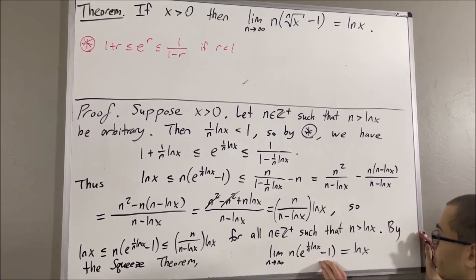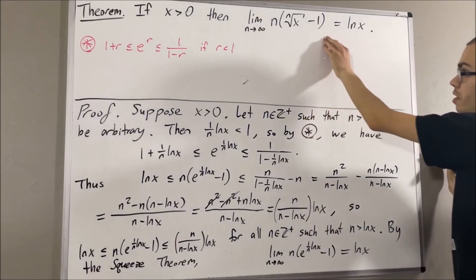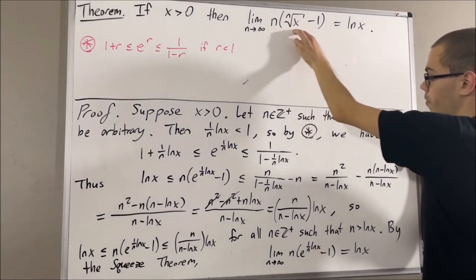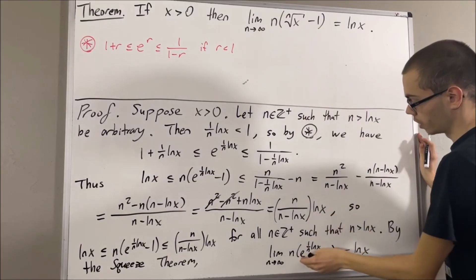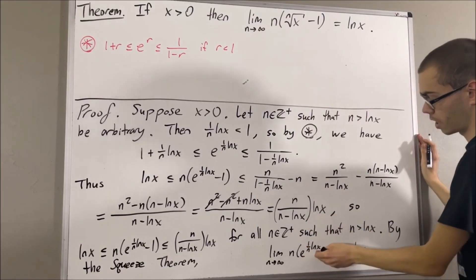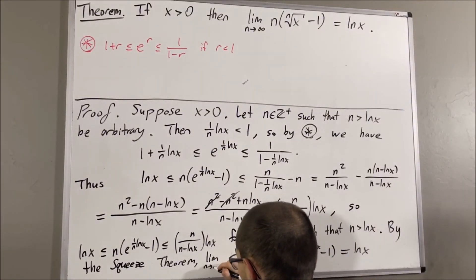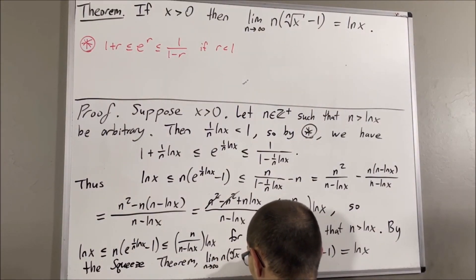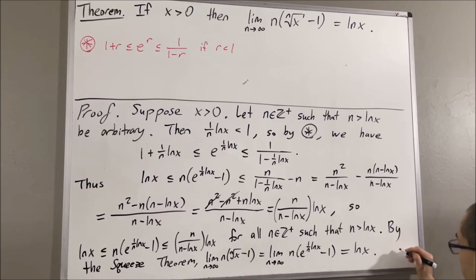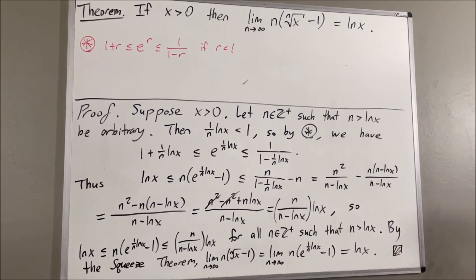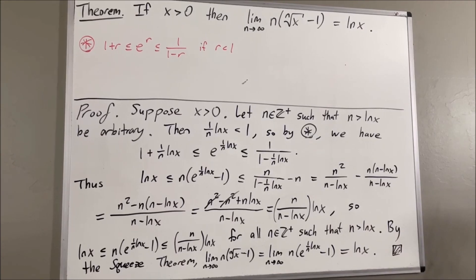This sequence is the same thing as the original sequence because the n-th root of x equals e to the 1 over n natural log of x. And so this completes the proof. That's pretty much it for this video. Thank you.